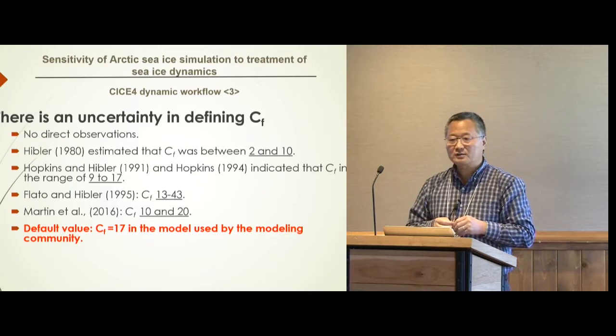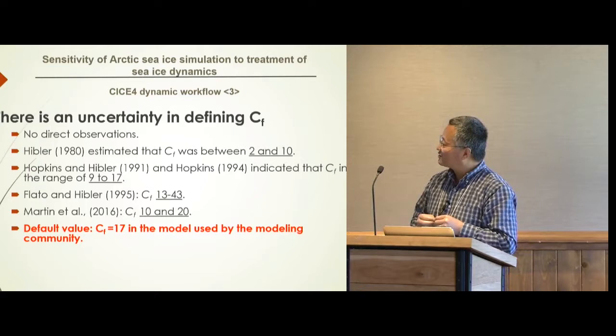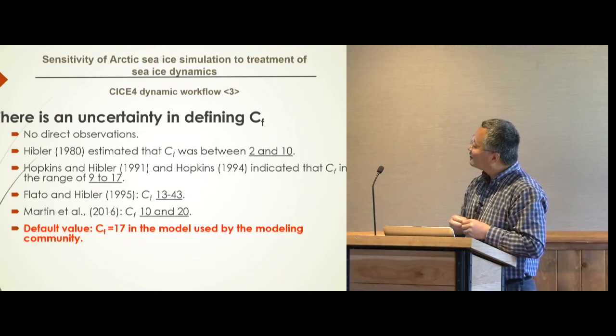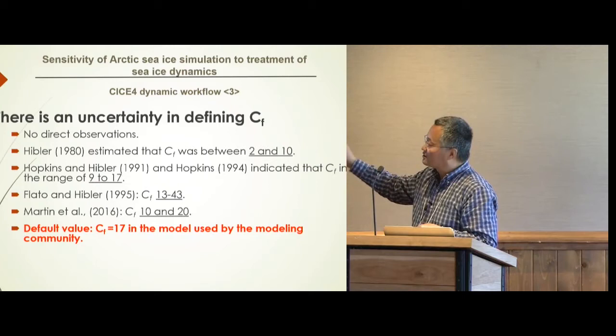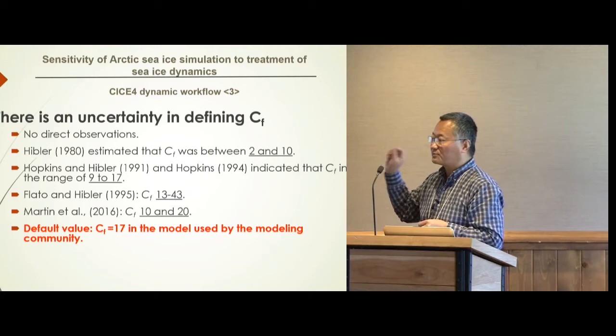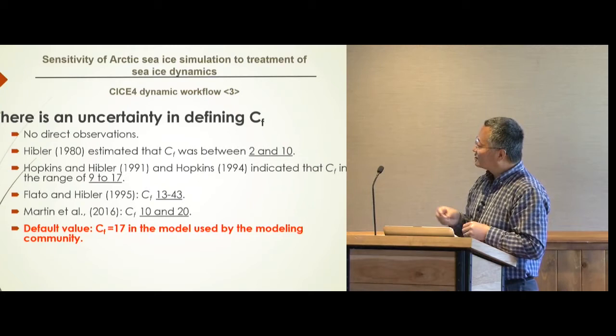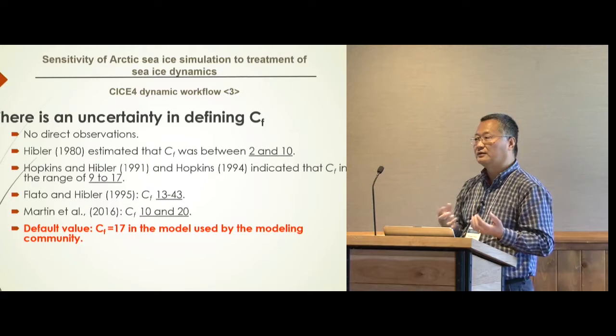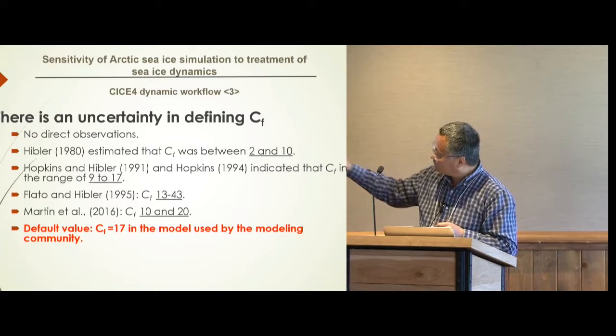Going back to the 1980s, Hibler — my colleague — used a range from 2 to 10 for CF. Looking at other publications, people use different numbers for their different simulations, but all of those simulations simply used the CIS dynamics model — not coupled with the atmosphere or ocean. When we look at the NCAR model, there is a pre-described value of CF equal to 17, which has been commonly used by the community for different climate studies. We tried to look at the effects of different CF values on the CIS solution.